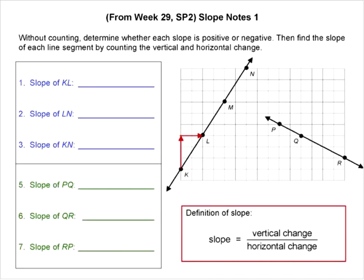This is SP2 from week 29. We have two lines on this grid, and we're going to find the slope to these lines by counting distances. We use this page to explain to students that the slope of a line is a number that is assigned to its slant based on the steepness and the orientation. And the slope is really a ratio of vertical change to horizontal change as we move from one point to another.